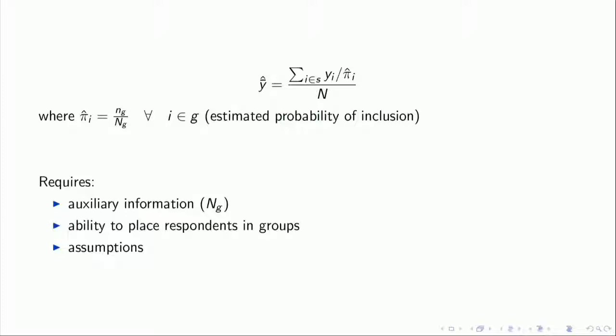One approach is to estimate the probability of inclusion π̂_i for each person — replacing the actual π_i with an estimated one. You estimate it as the number of people in your sample in a group divided by the number of people in that group in the population. For example, two people from Rhode Island divided by the total population of Rhode Island. This requires auxiliary information — knowing how many people live in each state — and you must be able to place respondents into groups. This means when collecting your survey data, you need to think in advance about what post-stratification you'll want to do.